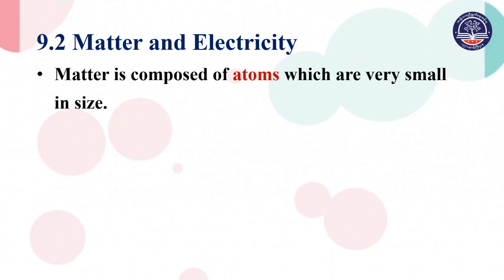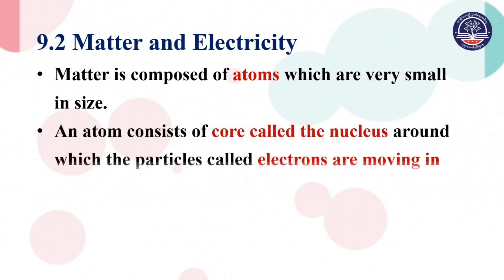Metal is composed of atoms, which are very small in size. An atom consists of a core called the nucleus, around which tiny particles called electrons are moving in orbits.